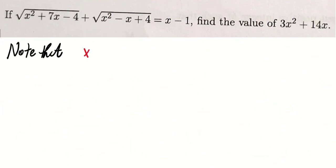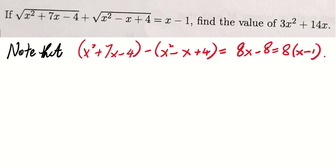Note that x squared plus 7x minus 4 minus x squared minus x plus 4 equals to 8x minus 8, which is equal to 8 times x minus 1. And recall that a squared minus b squared can be factorized as a plus b times a minus b.